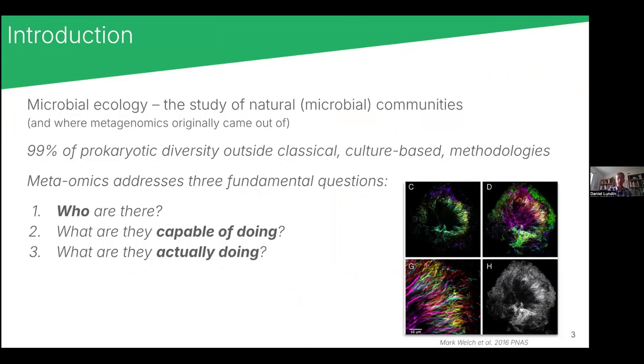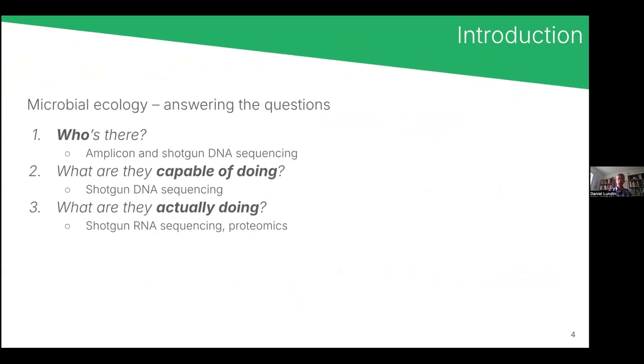So when it comes to microbial ecology, what we want to know about the community that we study is basically who are there. So the species composition or something similar, population composition perhaps. What are they capable of doing? And then capable, it's typically metabolism, but it could also be if they are capable of moving around in the water or other traits. But then we are also interested in what they're actually doing when we take our samples. And with omics techniques, we have ways of addressing these questions. And the first question, who's there, is typically based on DNA sequencing, and it can either be amplicons or PCR products of a single marker gene or a few marker genes, or actually shotgun DNA like in metagenomics.